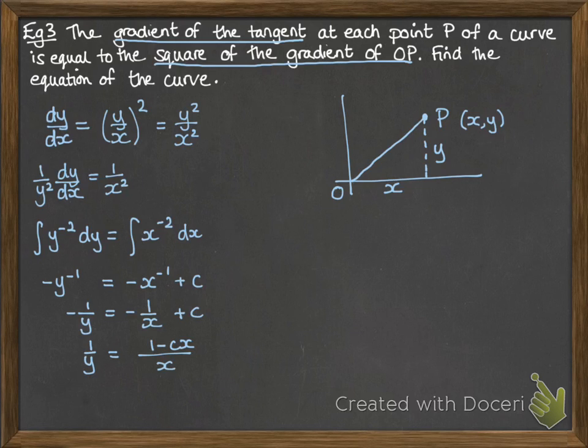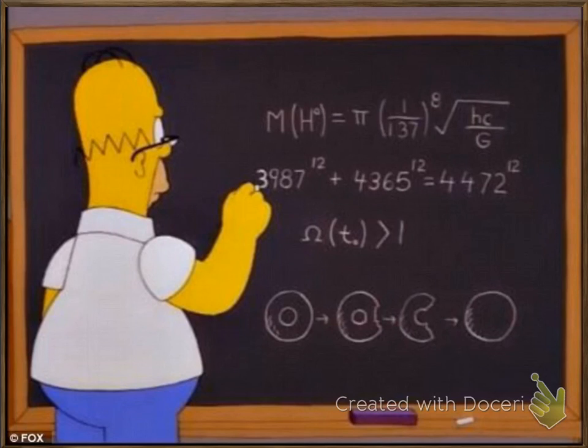And we've got to then just flip both sides of those fractions, and we get y equals x over 1 minus cx.